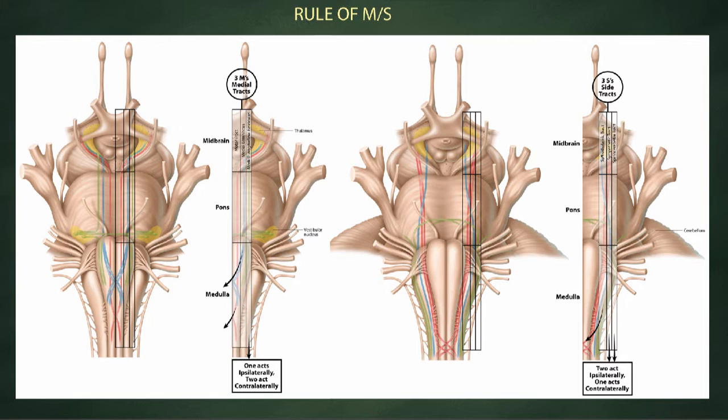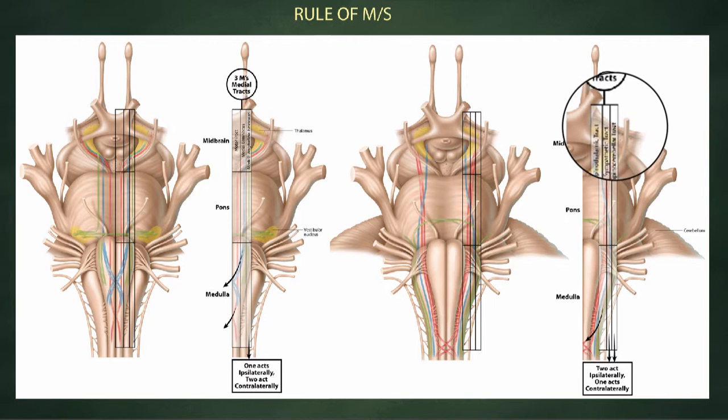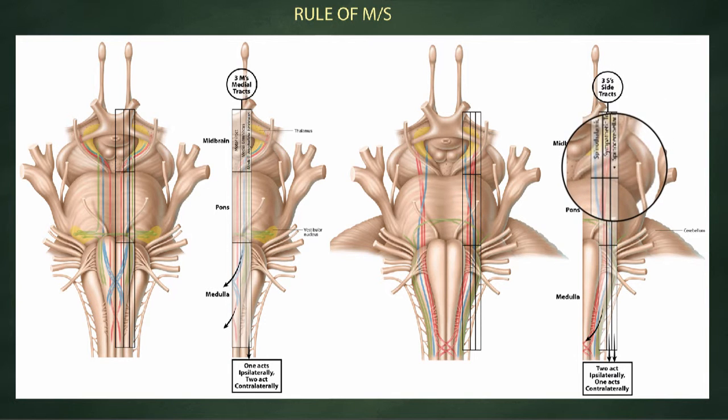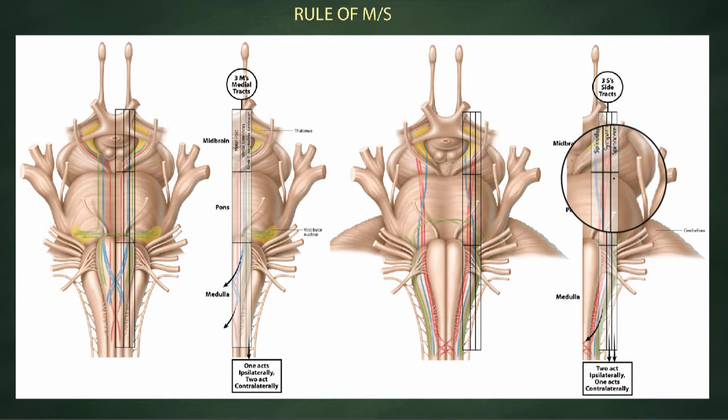Second, the sympathetic tract. Sympathetic tract is listed here in red and acts ipsilaterally, does not cross. And lastly, the spinocerebellar tract, which is indicated here in green, which also acts ipsilaterally.